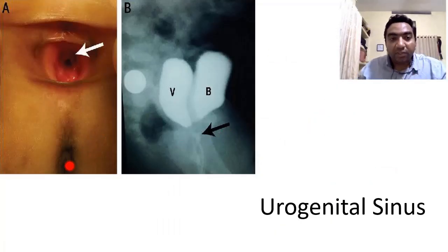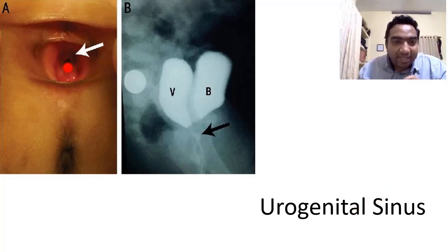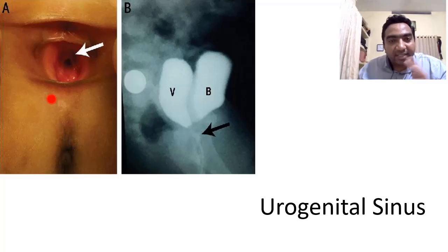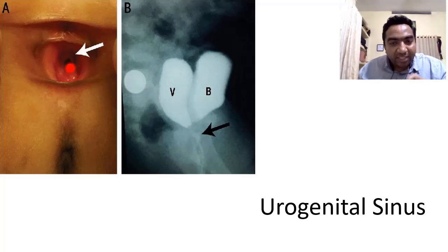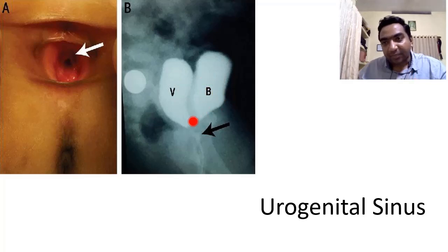This is an example of urogenital sinus — the development is arrested at the point of urogenital sinus. There is an anus, so the urorectal septum has divided the genitourinary system and the gut system separately, but the vagina and urinary bladder are opening into the same single opening. When we put a dye here, the vagina and the urethra will both be seen. That is the urogenital sinus.